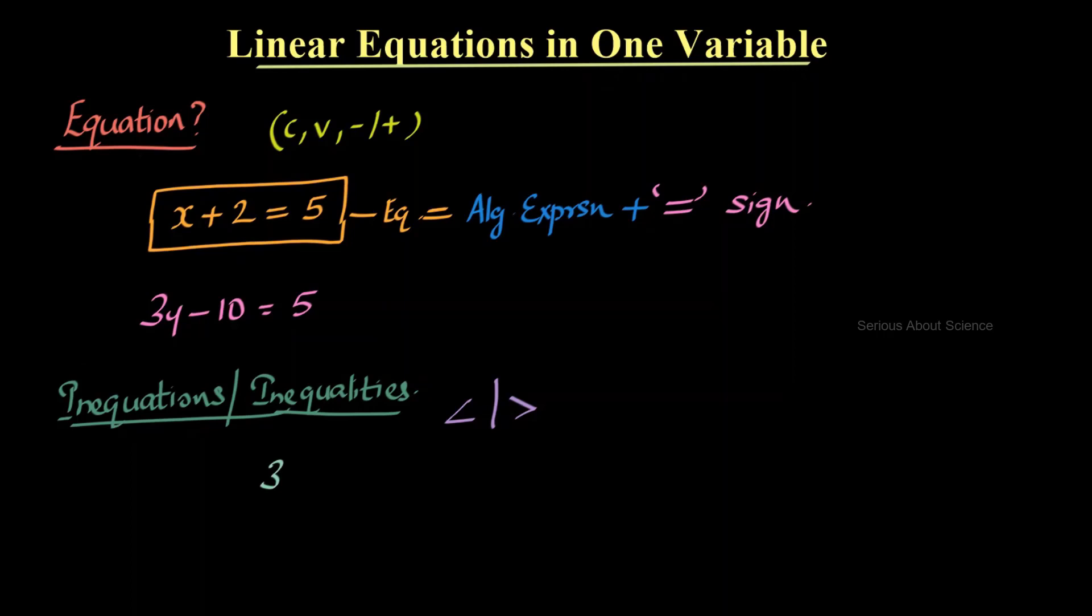That is, for example, 3y greater than 5. Another example is x less than 7. So two terms are there. First one is equation and second one inequations. An equation is an algebraic expression which consists of an equality sign. An inequation is an expression which consists of either less than or greater than symbol.